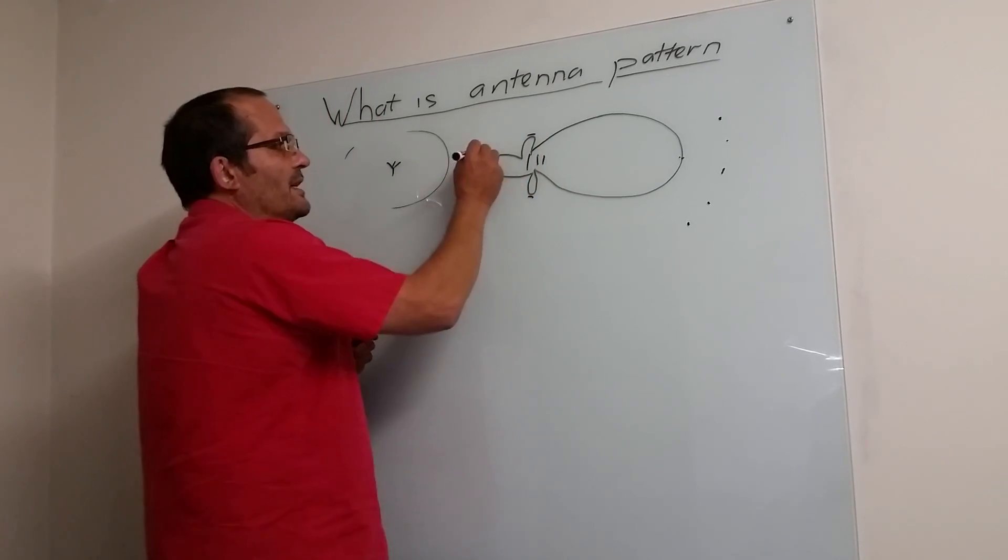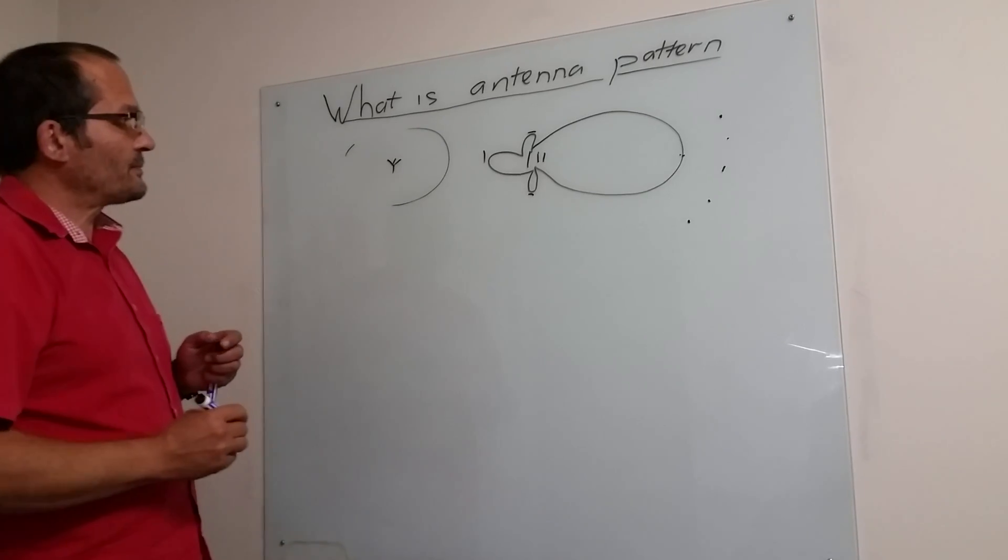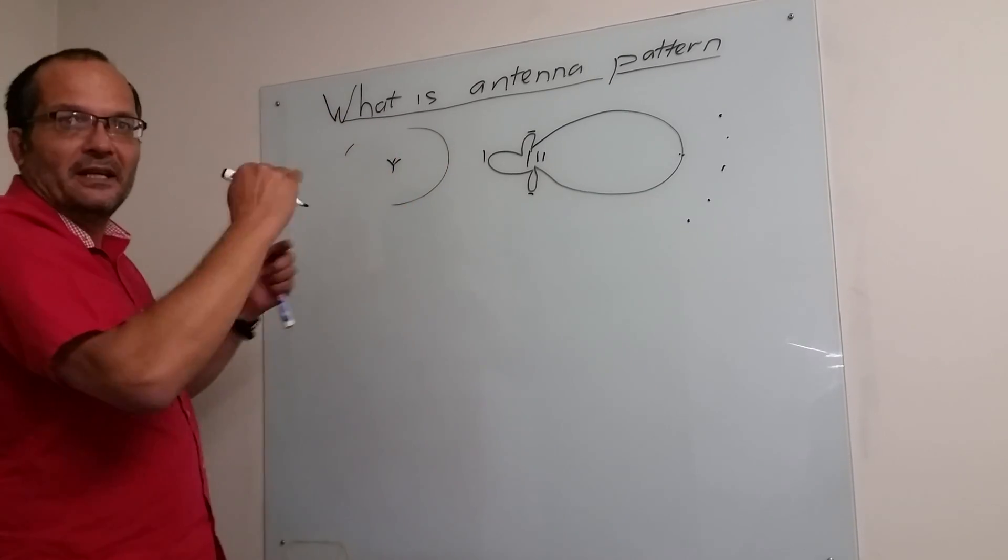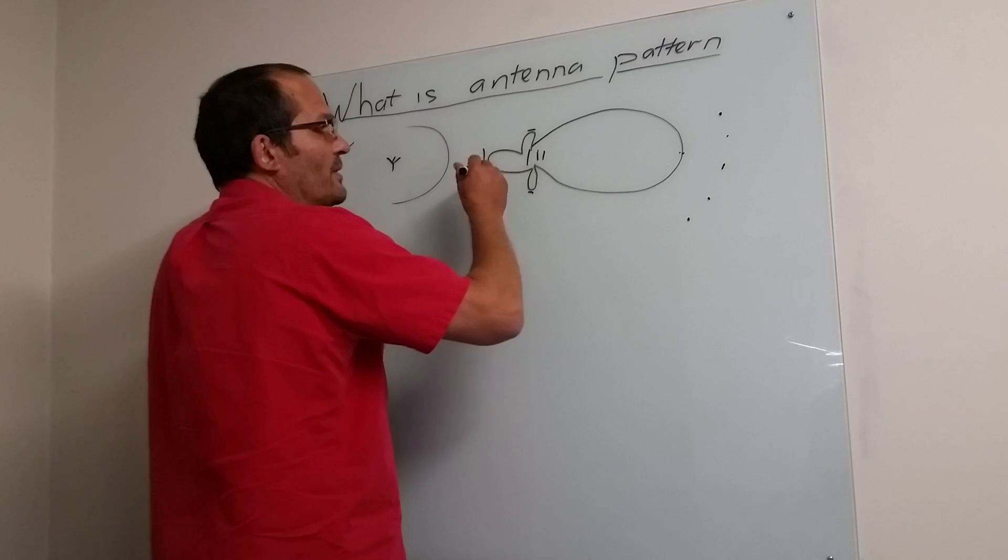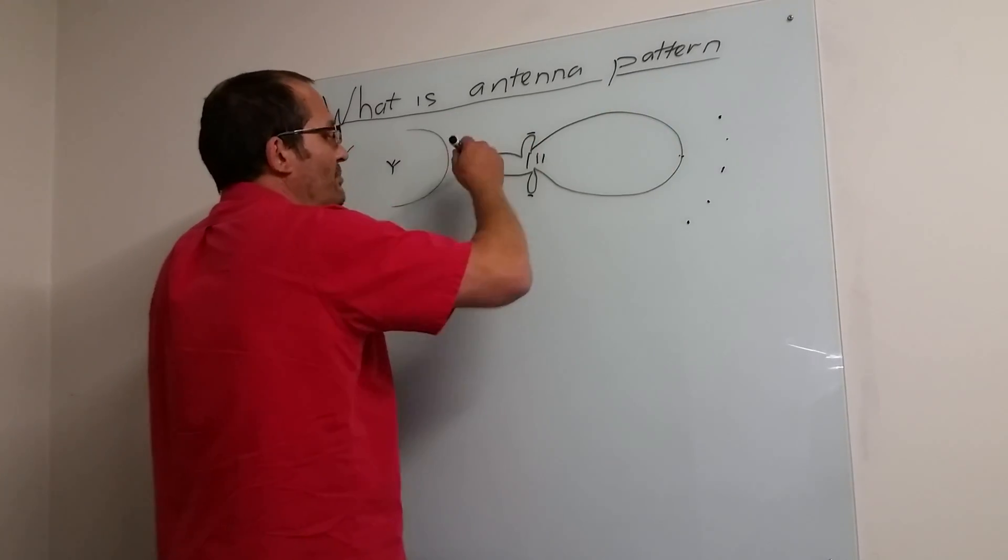These things here we call side lobes, and this we call a back lobe. So if you cut it in that way, you must probably get a similar type of thing with slightly different side lobes. Back lobe and front will always be the same, because they actually cut here, cut here, so they have the same point.